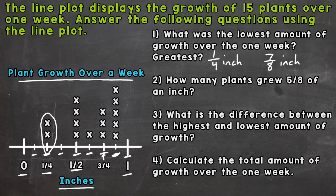Number two: how many plants grew five eighths of an inch? The eighths aren't marked on the line plot, so we need to figure it out. Here's one eighth, two eighths which is equivalent to one fourth, three eighths, four eighths which is a half, and then five eighths right here. How many x's are above five eighths? One — one plant grew five eighths of an inch.